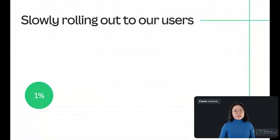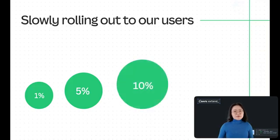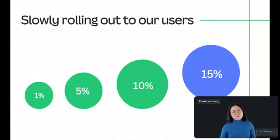We started small, releasing it to just 1% of our user base — the app performed flawlessly. We upped to 5%, still smooth sailing. Then 10%, and everything remained stable. But at just 15% capacity, something changed. Suddenly, we started receiving reports from our support team, complaints from users, and alerts from our monitoring platform. The app crashed — it couldn't handle the surge of traffic anymore.